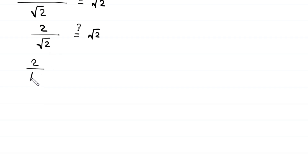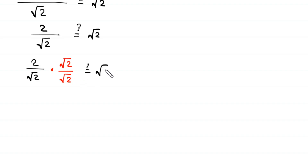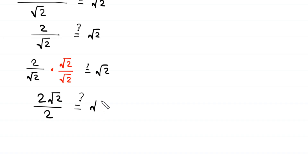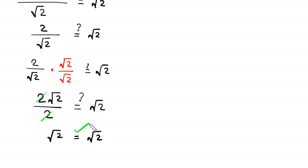To rationalize the denominator, we multiply and divide this expression by root 2. So 2 over root 2 multiplied by root 2 over root 2 gives us 2 times root 2 divided by root 2 times root 2, which is 2 root 2 divided by 2. The 2 cancels out, leaving root 2 is equal to root 2. The left hand side equals the right hand side, confirming x equals root 2 is a valid solution.